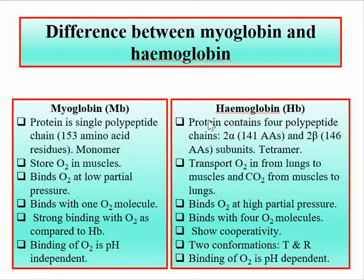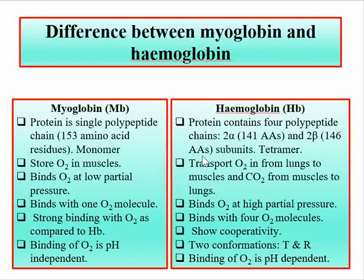Myoglobin is a monomeric form, while in hemoglobin the protein contains four polypeptide chains — two alpha chains and two beta subunits. The two alpha chains contain 141 amino acid residues, while the beta subunits contain 146 amino acid residues, making it an approximate tetramer of myoglobin.